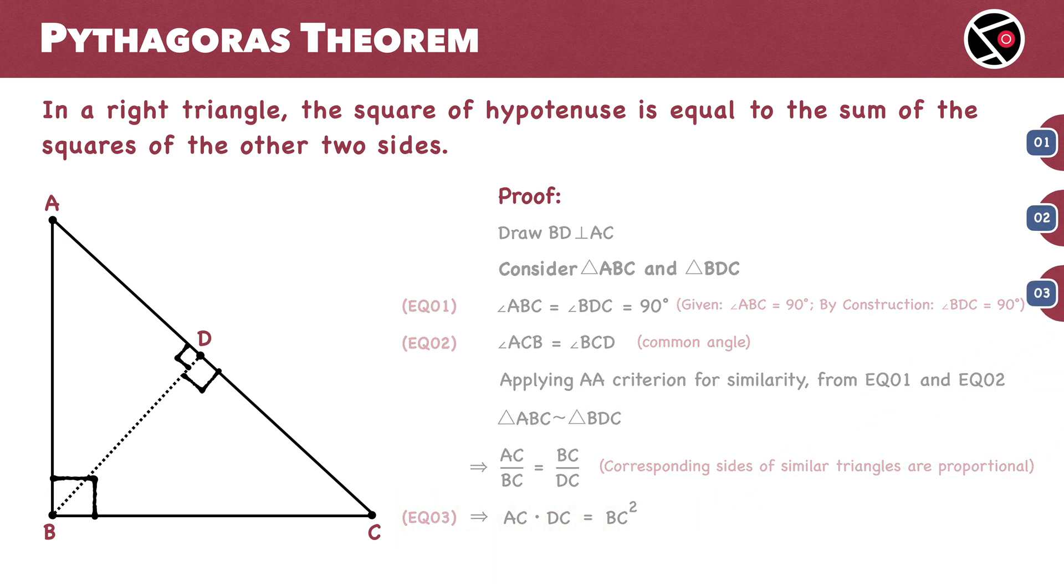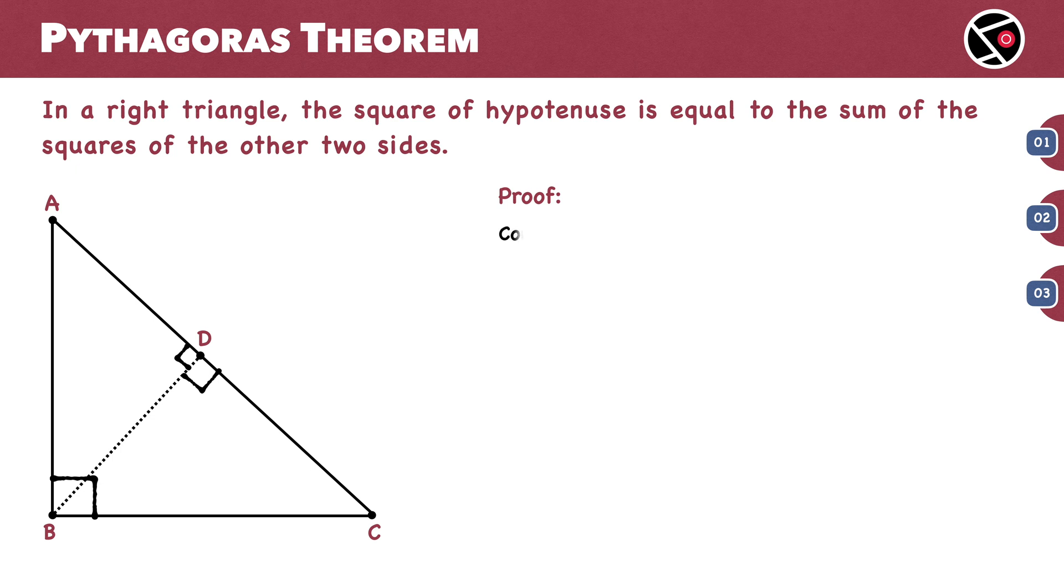Now, let's look at a different set of triangles: triangle ABC and triangle ADB. Angle ABC equals angle ADB. Both are 90 degrees. This is equation 4.